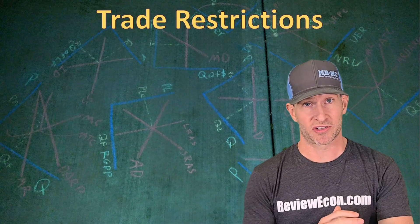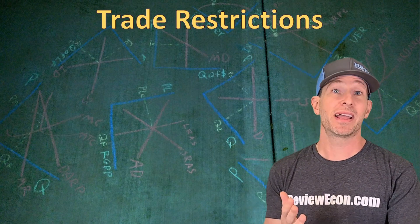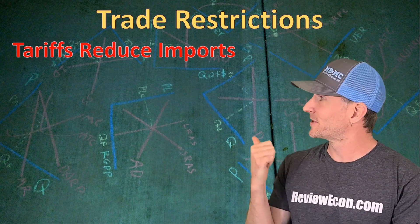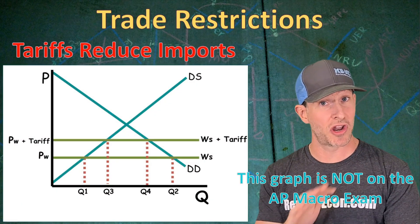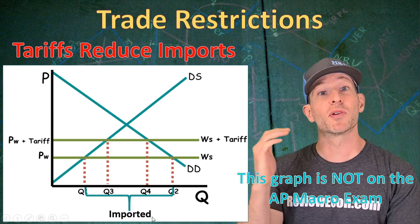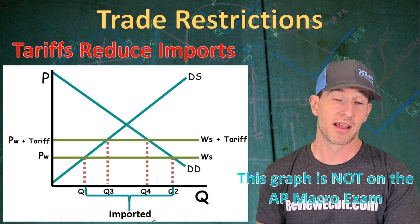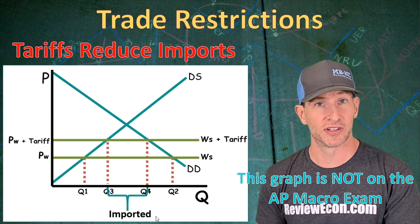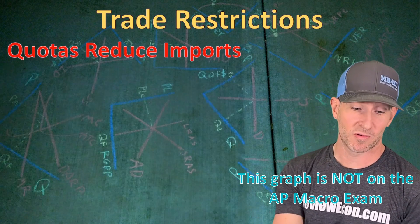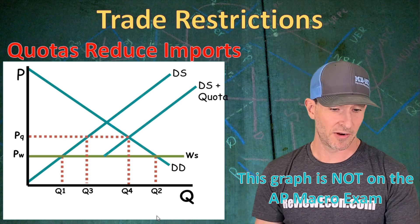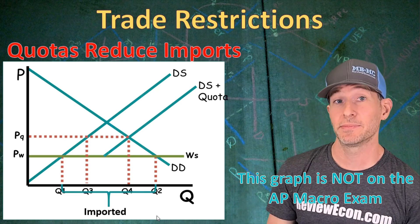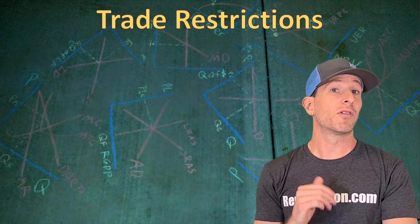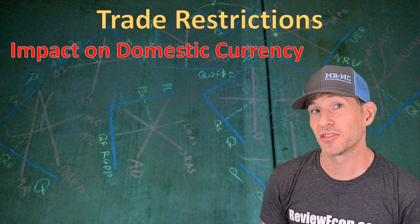The first thing we're going to do is look at trade restrictions and their impact on the foreign exchange markets. As you may have learned back in micro, tariffs are one of those trade restrictions — they reduce imports. With international trade and no tariff, we will have a large quantity of goods imported whenever the world price is lower than the domestic equilibrium price. If we put a tariff on this graph, it shifts the price upward and we get a smaller number of goods imported. Quotas are another trade restriction and quotas will also reduce imports, giving us a smaller number of goods and services imported from other countries.